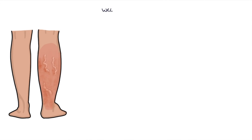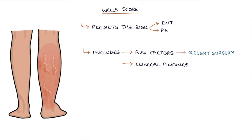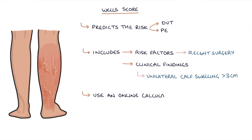Next, let's talk about the Wells score. The Wells score predicts the risk of a patient presenting with symptoms having a DVT or a PE. It includes risk factors such as recent surgery and clinical findings such as unilateral calf swelling of more than 3 centimetres compared to the other leg. You can use an online calculator to calculate the Wells score.